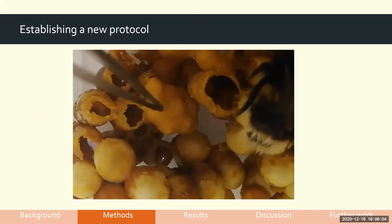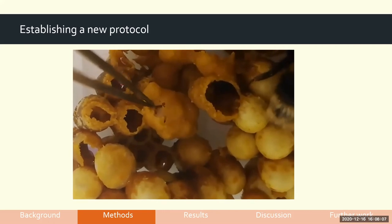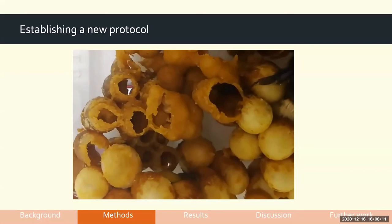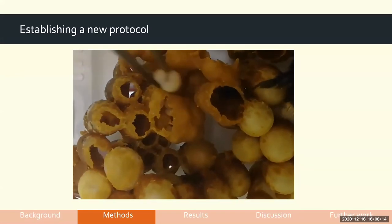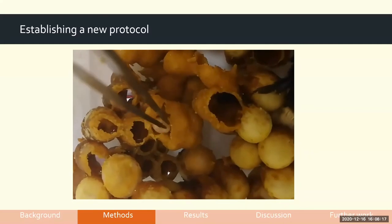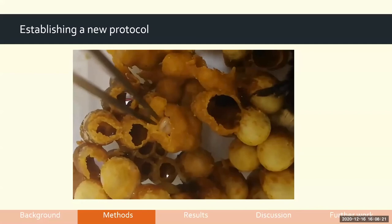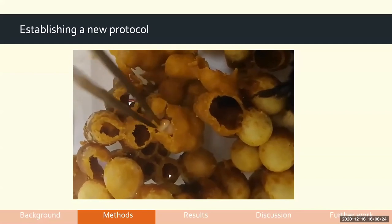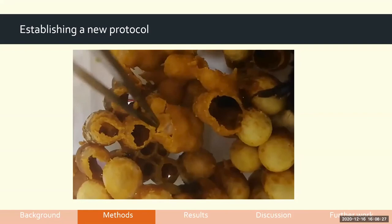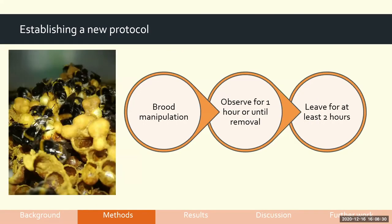Here's a little video of what we do. We open up the brood cell — this is L2 larvae as an example — take out the larva, and then swap either a different larva or the same larva back in depending on the treatment group. We tuck them back in and pull the wax over as best we can to seal the larva back in. We then observe the focal larva and record every interaction it experiences for an hour or until the larva is removed. We leave the whole colony for at least two hours afterwards to allow it to equilibrate before doing anything else.